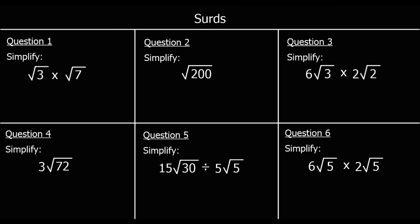To finish up, there are 6 questions — pause the video, give them a go, and press play when you're ready to carry on. Question 1: root 3 times root 7. 3 times 7 is 21, so root 3 times root 7 is root 21.